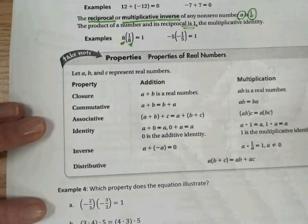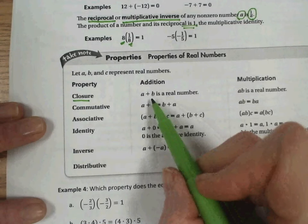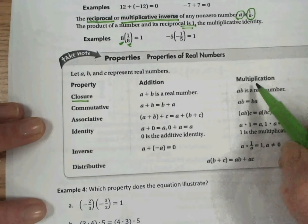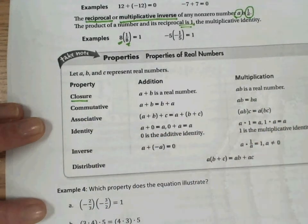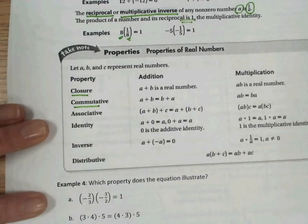You can take a look at the chart here, and we have some other properties. The closure property here is represented by a plus b is a real number. And the multiplication version of the closure property would be a times b is a real number.